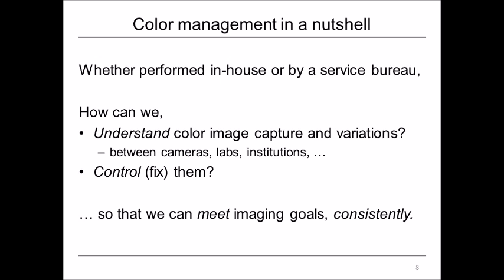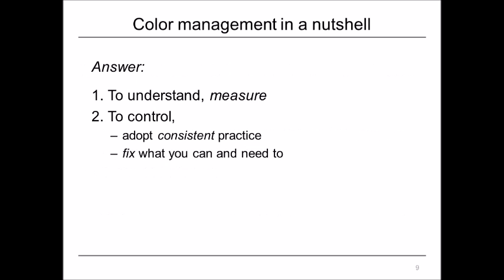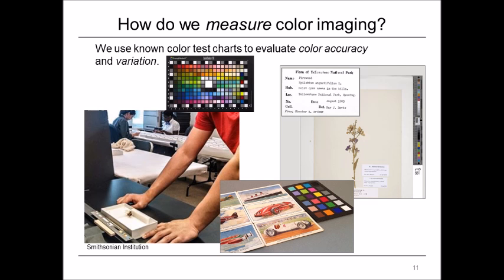The answer to how we can do that is: first, to understand the variation and the color quality we need to measure it; and second, to control it we need to adopt consistent practice and then correct or fix what we can. We also need to understand how to measure color imaging.